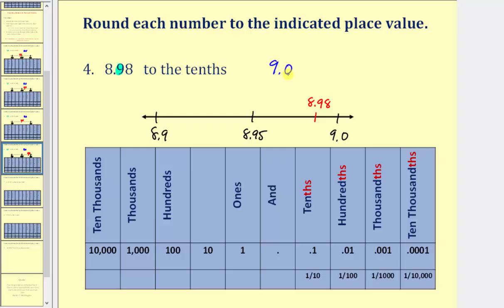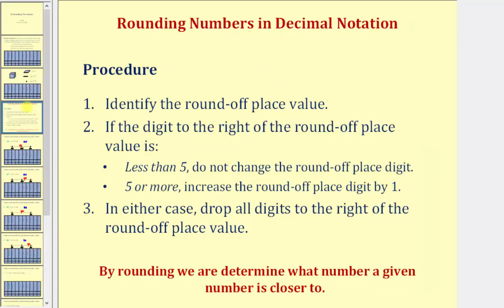Now let's look at our formal rules for rounding. Step one: identify the round-off place value. Step two: if the digit to the right of the round-off place value is less than five, we round down and do not change the round-off digit. If the digit to the right is five or more, we round up and increase the round-off digit by one. In either case, we drop all digits to the right of the round-off place value. By rounding, we're determining what number a given number is closer to based upon the round-off place value.